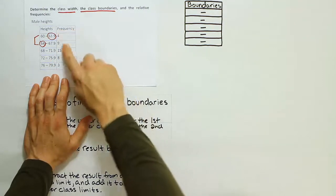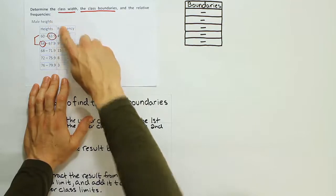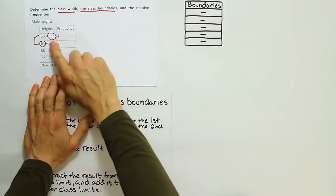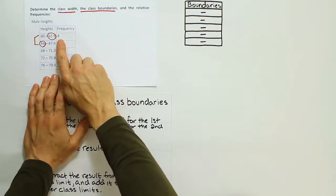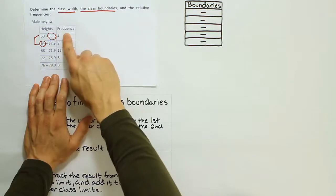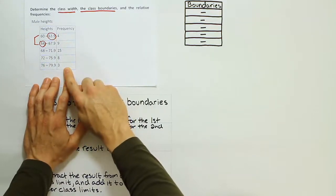The frequency column lists how many, in this case men, have heights in this range. So for example, four men had heights between 60 and 63.9 inches. Then so on and so on throughout.